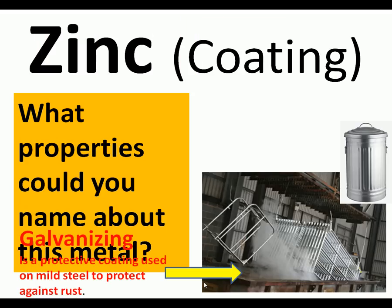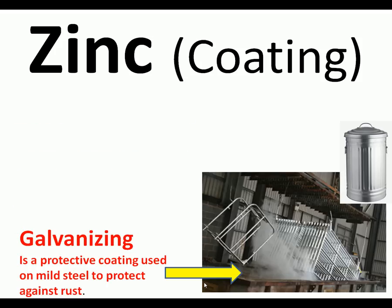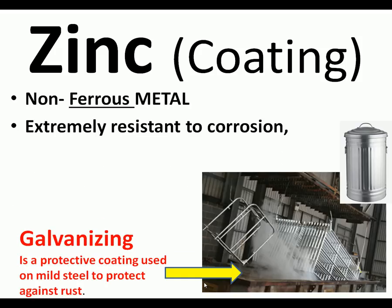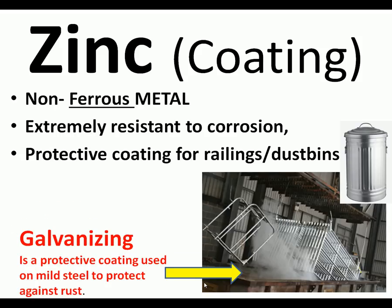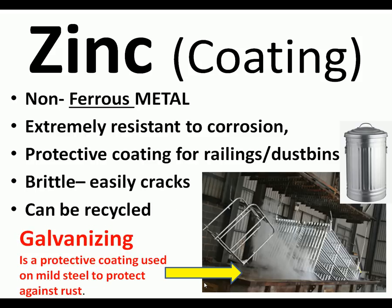Zinc is important not so much as a standalone metal but for what it's used for: galvanizing. Galvanizing is a protective coating — mild steel, like those railings, is dipped into a hot bath of zinc to become galvanized, protecting it against rust. Zinc is very resistant to corrosion. A galvanized bin, for example, is mild steel dipped in zinc. On its own, zinc is quite brittle, but it can be recycled.